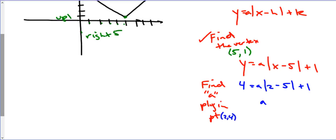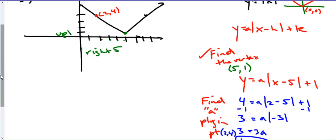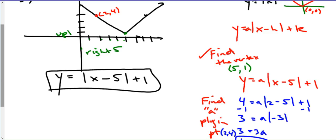We have A times negative 3, which equals 3, so 3A equals 3. A is going to equal 1. So we've noticed that A equals 1. We plug that back in and get our final equation. Y equals the absolute value of X minus 5 plus 1. That's our final equation for that graph.